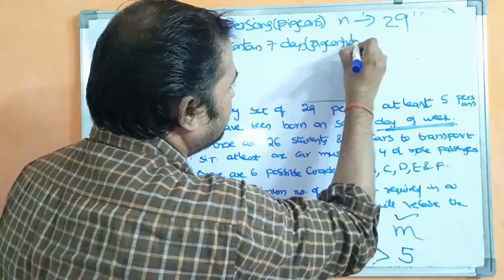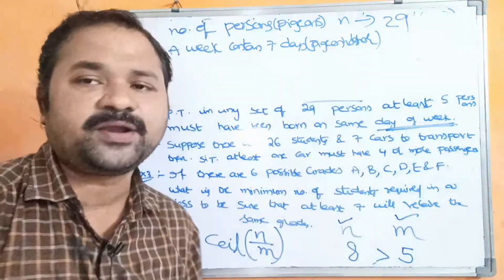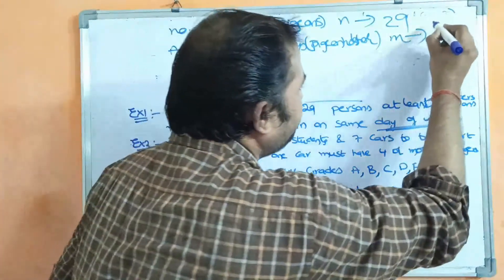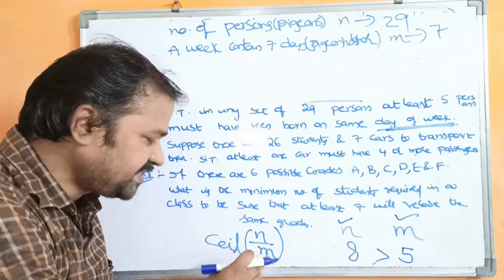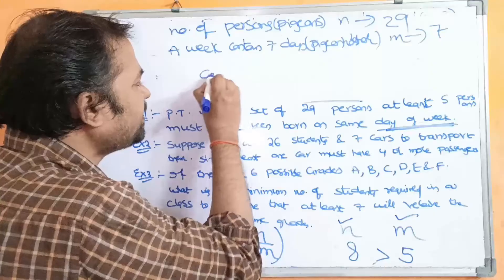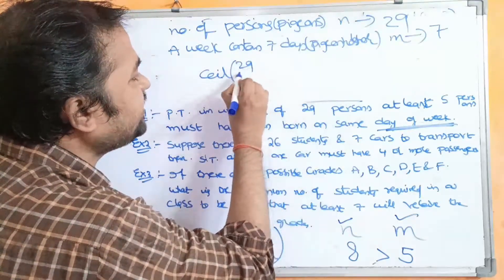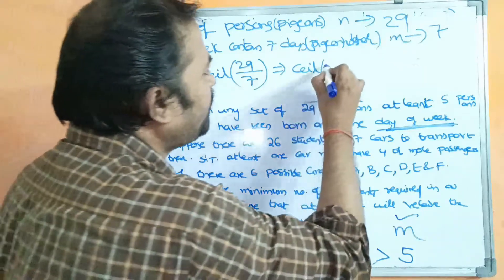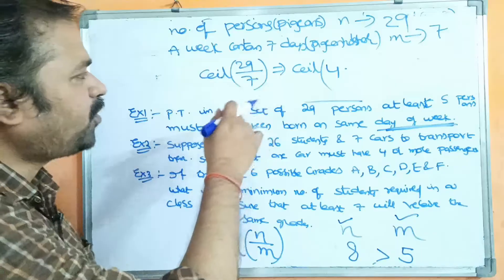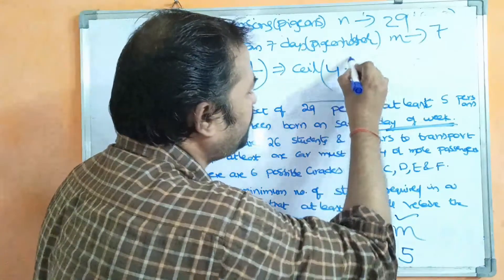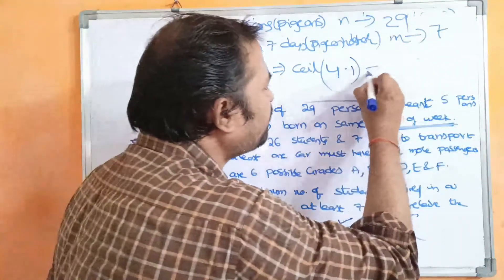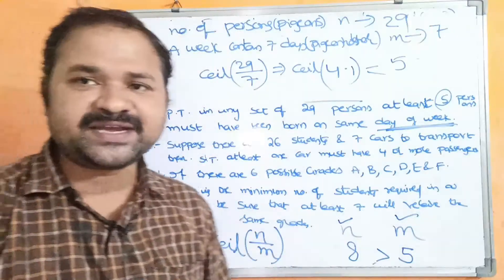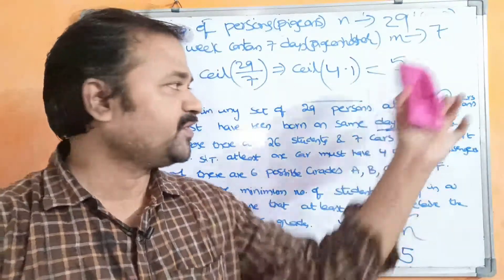So m equals 7. Applying the formula, at least one pigeonhole must contain ceiling of n by m — ceiling of 29 by 7. The result of 29 divided by 7 is approximately 4.1 something. The ceiling of 4.1 gives the next integer value, which is 5. So we can conclude that 5 persons must have been born on the same day of the week.